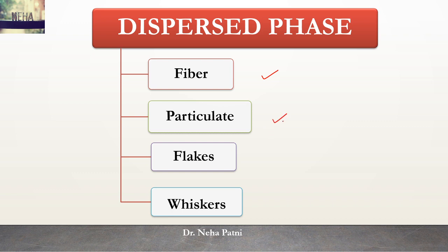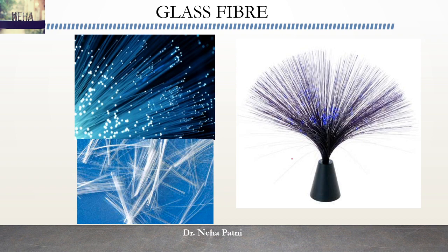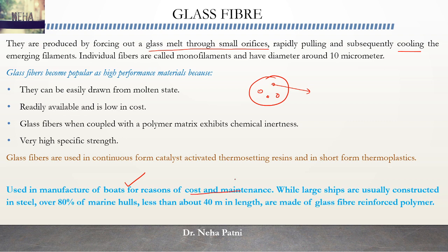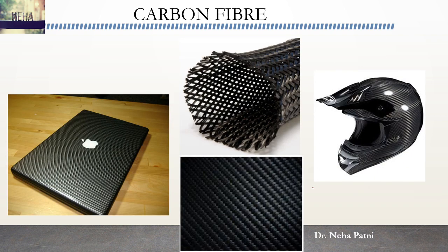What are fibers? One example is glass fiber. Glass fibers are produced by forcing the glass melt through small orifices - the glass melt is pushed through the orifice and then immediately cooled, and that's how the fiber is made. They are very popular, readily available, and low in cost. With respect to application, they are used in the manufacture of boards. Large ships are constructed in steel, so they make a glass fiber reinforced polymer where glass fiber is used as the dispersed phase in reinforcing the polymer.